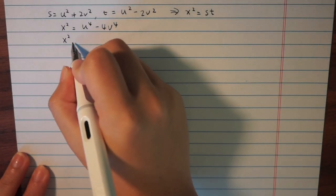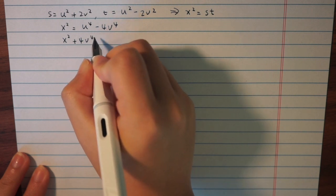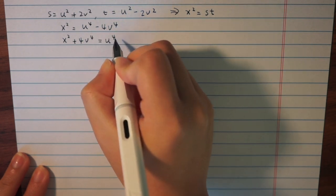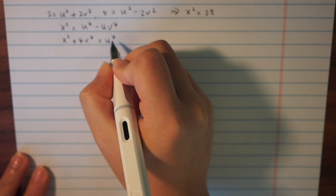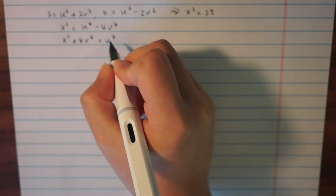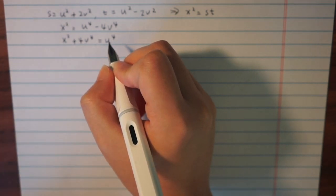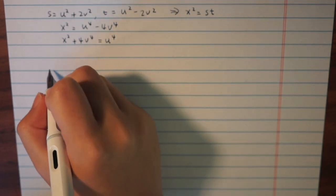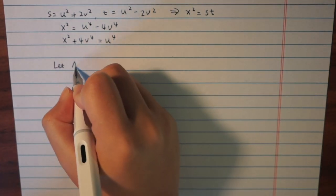If you put 4 times v to the fourth on the left hand side, we get x squared plus 4v to the fourth equals u to the fourth. Unfortunately, this isn't quite the equation we are looking for, so we repeat the process.